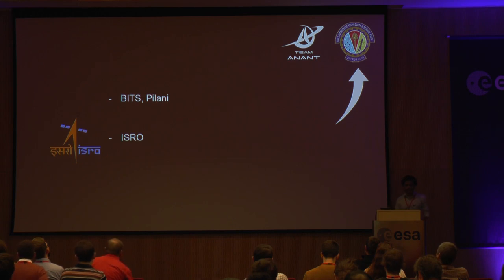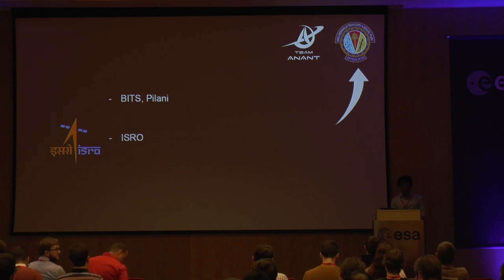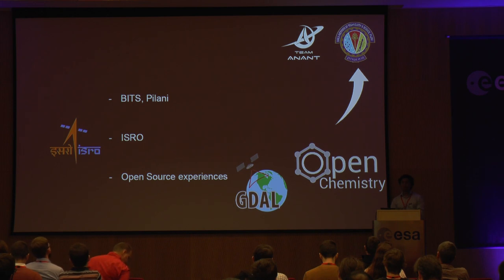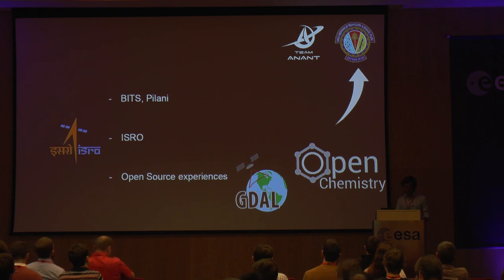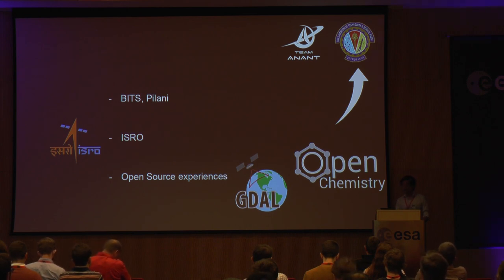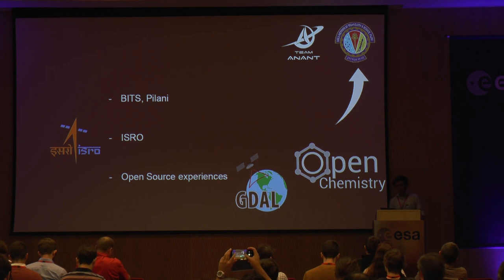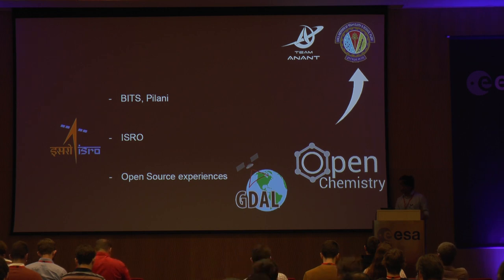I interned at the Indian Space Research Organization this summer, working on satellite dynamics and control and doing something with a Kalman filter. I started with open source in my freshman year. My first experience was with a library called GDAL, by an organization called OSG. I used GDAL to read and process hyperspectral images. I later moved on to open chemistry, working with software called Avogadro, which lets you visualize molecules of thousands of atoms — mostly proteins.